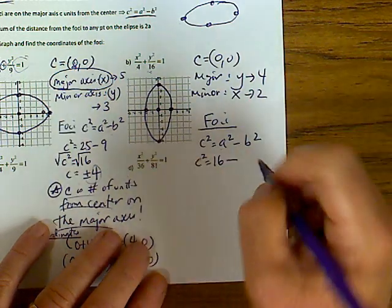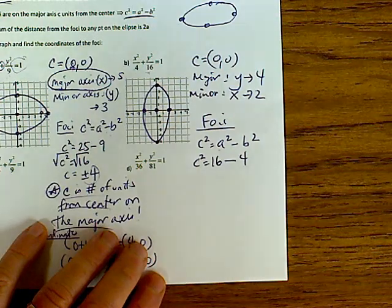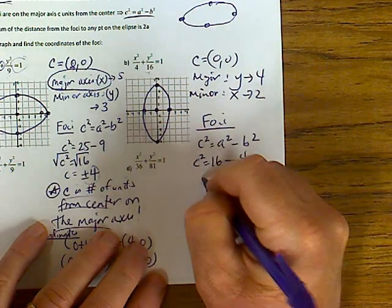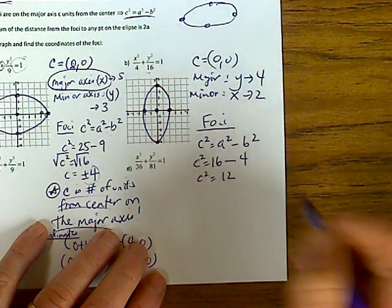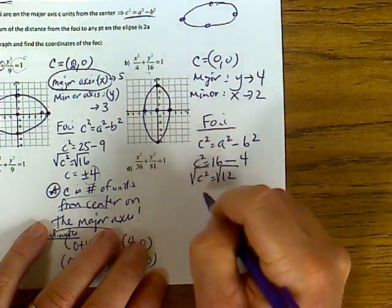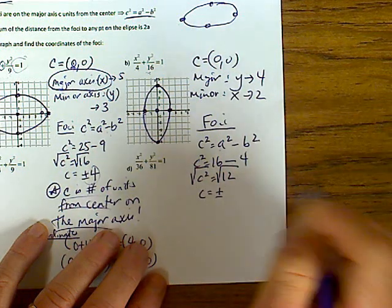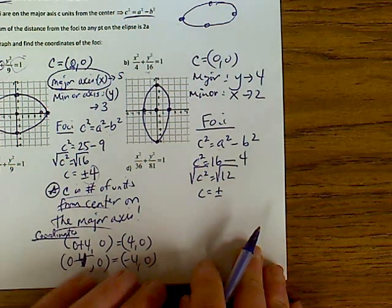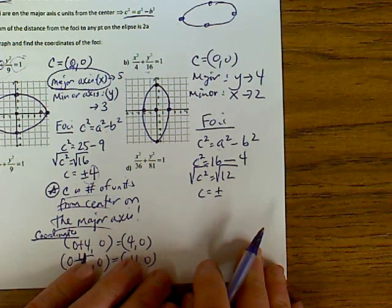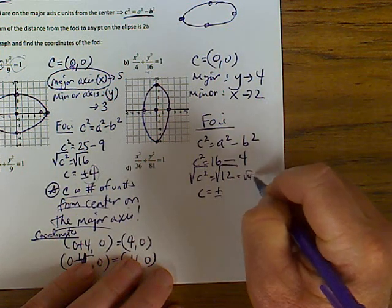So c² is going to equal the biggest bottom — a² = 16 — subtract the smallest bottom, which is 4. So 16 minus 4 is 12. We're going to square root each side. And c is going to equal — you want to leave this in simplified square root form, not a decimal.